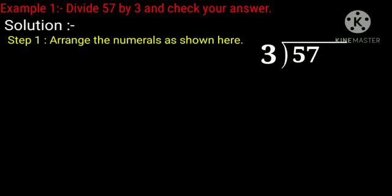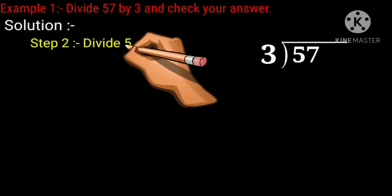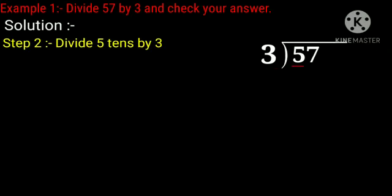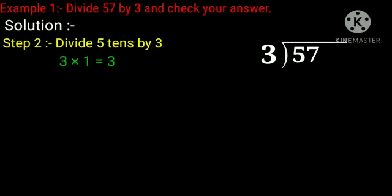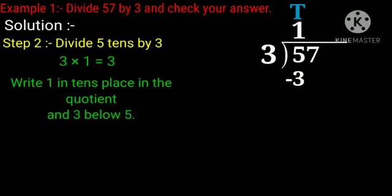Since 3 is smaller than 5, we can divide 5 by 3. Now, divide 5 by 3. Count the multiplication table of 3 till you get 5 or less than 5. In the table of 3, there is no 5, so we take the number which is less than 5. 3 ones are 3 and 3 twos are 6 which is greater than 5. So we take 3 multiplied by 1 equals 3. Write 1 in the tens place in the quotient and 3 below 5.